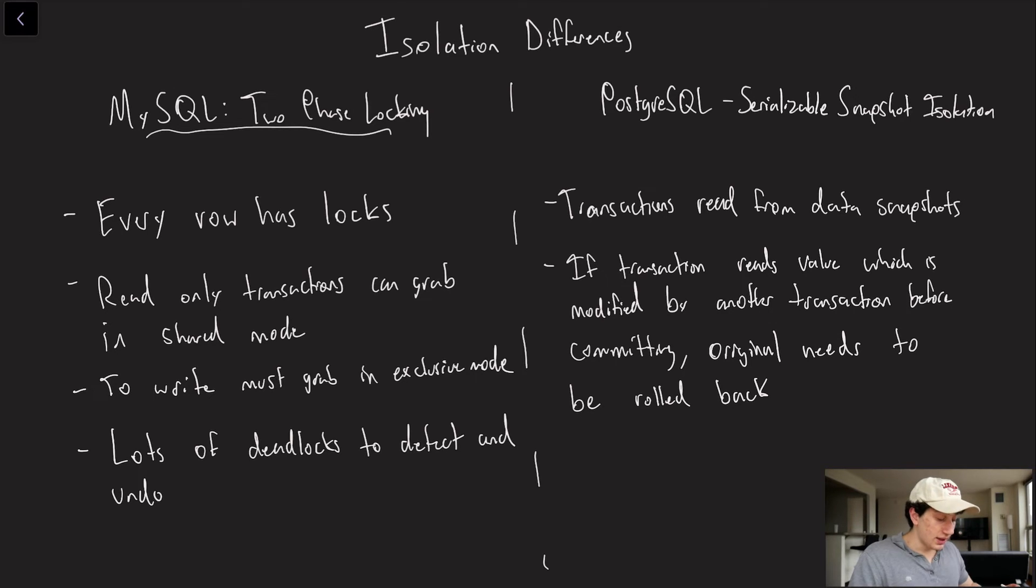So for MySQL, we use two-phase locking, and two-phase locking is where basically every single row has locks. In order to read a row in a transaction that's read-only, you can grab the lock in a shared mode, but in order to write, you have to get it in an exclusive mode, and so that makes reads a little bit more optimized than writes. That being said, you still do have to grab a lot of locks at the end of the day, and with all of those locks, we can have transactions that grab the same set of locks, thus causing deadlocks, which we would have to get rid of and hurt our performance even more.